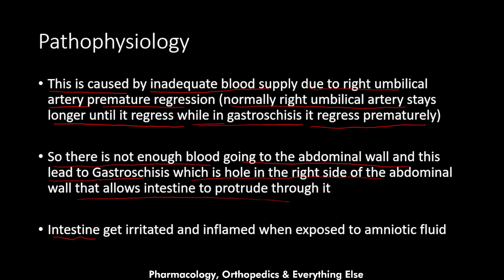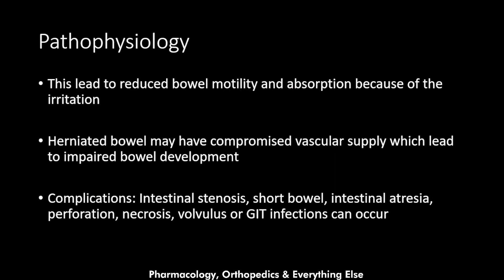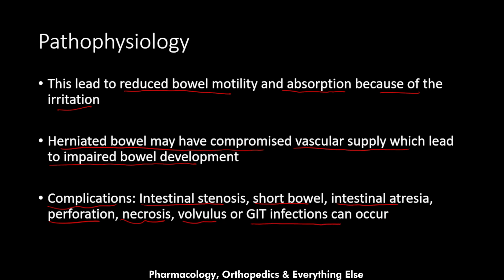The intestine gets exposed to the amniotic fluid and may become irritated and inflamed. This leads to reduced bowel motility and reduced bowel absorption. The herniated bowel may also have compromised vascular supply, leading to impaired bowel development. This can cause complications such as intestinal stenosis, short bowel syndrome, intestinal atresia, perforation, intestinal necrosis, volvulus, or GI infections.